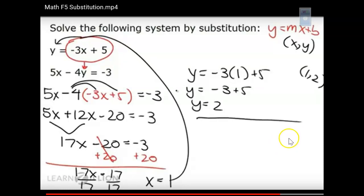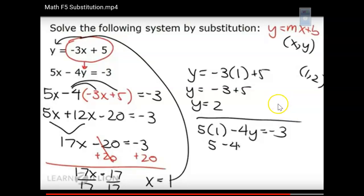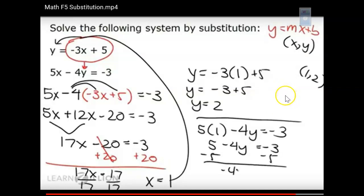To verify, substitute x = 1 into the second equation: 5(1) - 4y = -3, so 5 - 4y = -3. Subtract 5: -4y = -8. Divide by -4, and y = 2. It doesn't matter which equation you use to find the second value — both give the same answer. Just be aware that you always need both x and y.